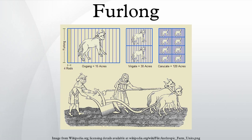When England changed to the shorter foot in the late 13th century, rods and furlongs remained unchanged, since property boundaries were already defined in rods and furlongs. The only thing that changed was the number of feet and yards in a rod or a furlong, and the number of square feet and square yards in an acre. The definition of the rod went from fifteen old feet to sixteen and a half new feet, or from five old yards to five and a half new yards. The furlong went from six hundred old feet to six hundred sixty new feet, or from two hundred old yards to two hundred twenty new yards.